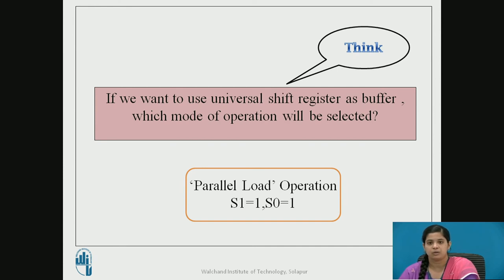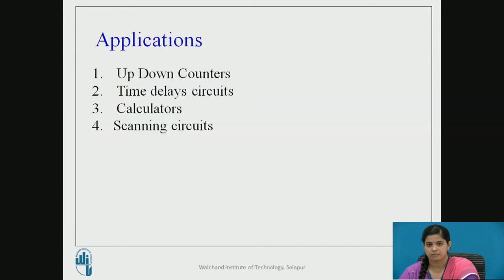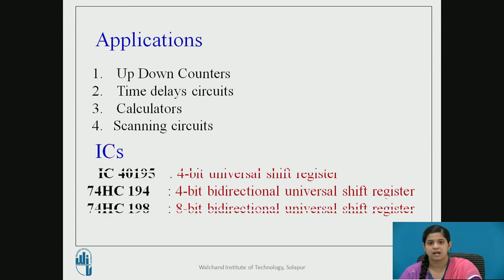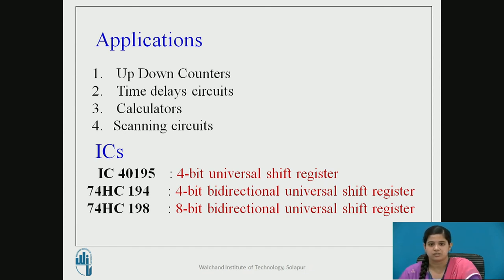These are some applications of the universal shift register: it is used for up-down counters, time delay circuits, calculators, and scanning circuits. The available ICs include the 40-series: 40195 is a 4-bit universal shift register. The 7400 series includes 74HC194 and 74HC198 as universal shift registers.